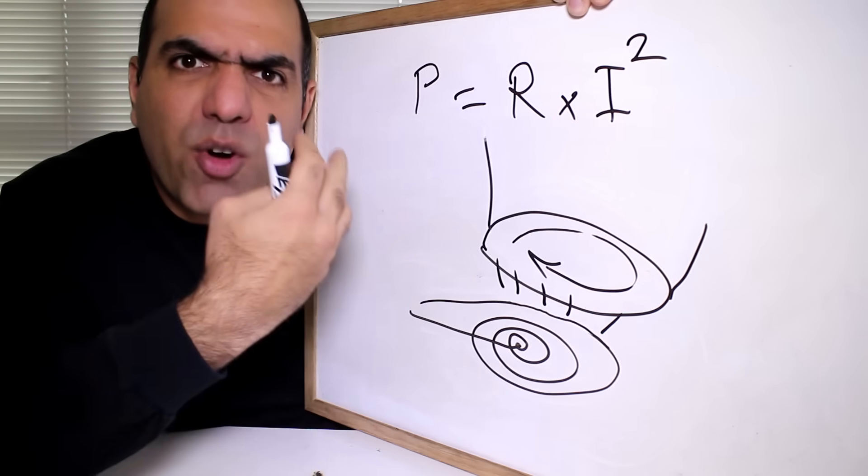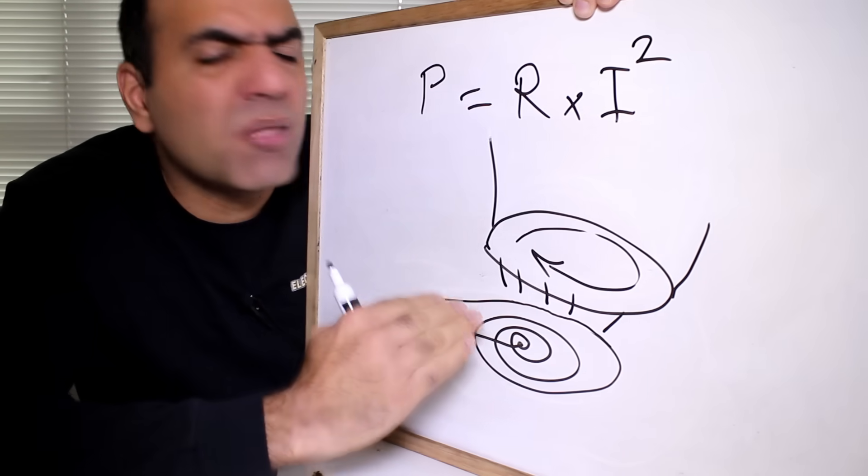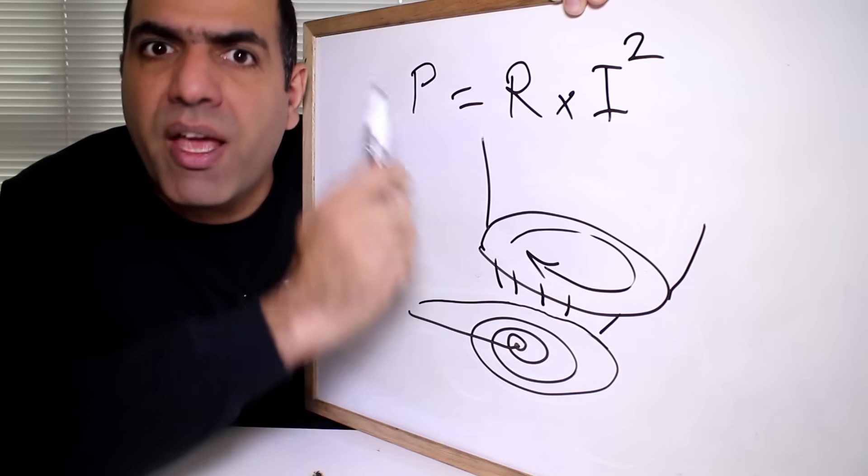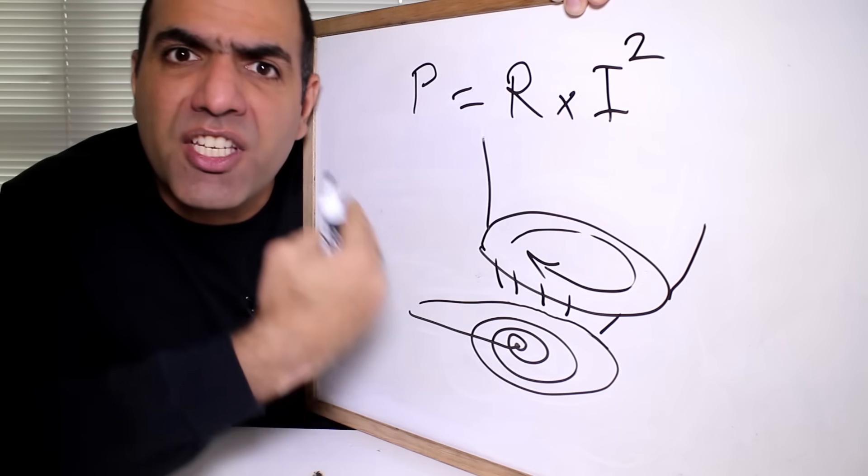And also, because iron is ferromagnetic, the AC current runs much closer to the surface of the conductor due to something called skin effect. And that further increases the resistance.